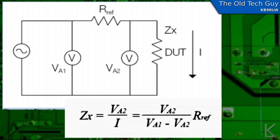Here's the formula. Impedance equals Va2 — the voltage across the unknown — divided by current. We don't know the current, but we can calculate it based on the known resistor. The actual formula that matters is: take Va2 and divide it by (Va1 minus Va2), then multiply that by your reference resistor. So it's: Z = (Va2 / (Va1 − Va2)) × Rref. Pretty simple formula.